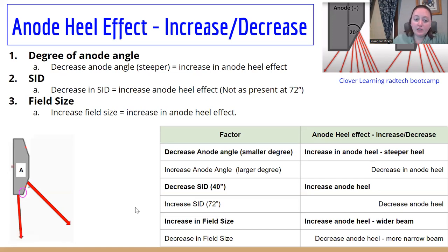So if you decrease your anode angle, we've already talked about that. You're going to increase your anode heel effect, a decrease in SID. So coming closer to the part will increase the anode heel effect. It is not as present at 72 inches as it is at 40.